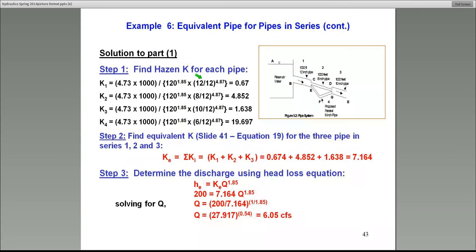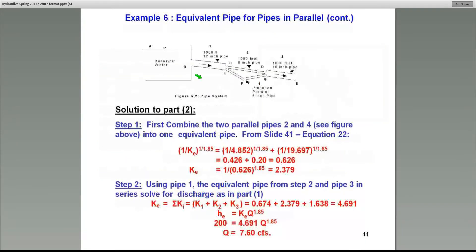That's called the equivalent pipe method. You can do the same thing for parallel pipes also. Here I'm showing you the application of the parallel pipe thing. In this case, we still have the three pipes in series, but there's a fourth pipe added on that's in parallel to pipe number two.